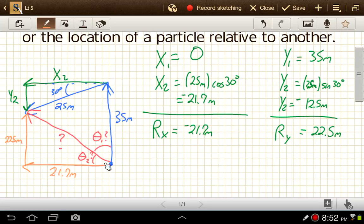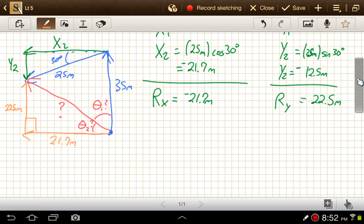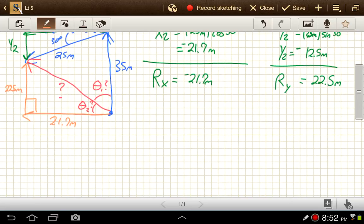So it's up 35 and then down 12.5, so up 22.5. We want to know the hypotenuse of this triangle. We know the two legs of that triangle, so we can find the hypotenuse using the Pythagorean theorem.